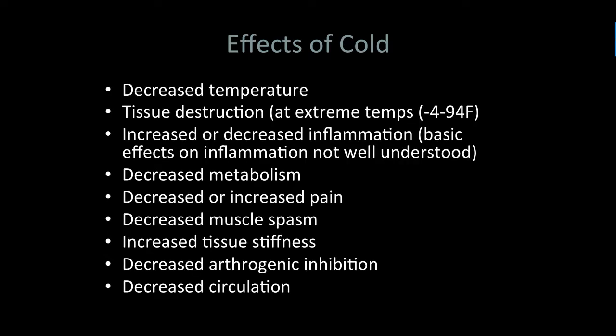What kind of effects are we going to get? Of course, we're going to be able to decrease temperature. We can cause frostbite, so we can destroy tissue as well. The typical physiological effect we think we're doing this for is decreasing inflammation. But it's one of those things we don't fully understand. What we can do with it: we can decrease metabolism, decrease the actions of cells in the area, decrease pain, decrease muscle spasm, and increase tissue stiffness.